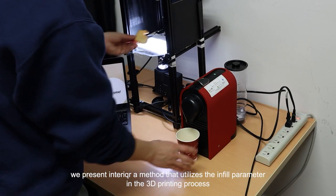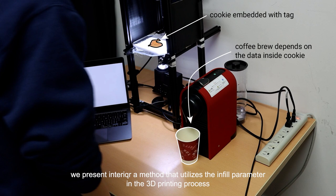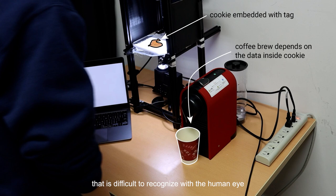We present Intericker, a method that utilizes the infill parameter in the 3D printing process to embed information inside the food that is difficult to recognize with the human eye.